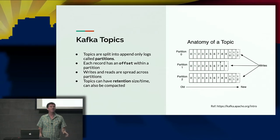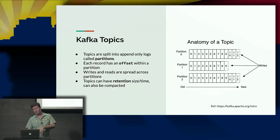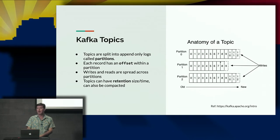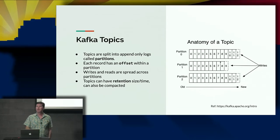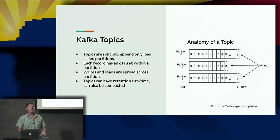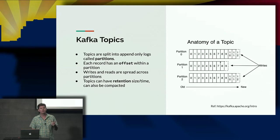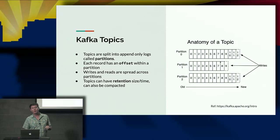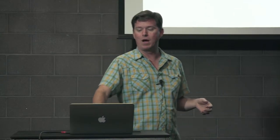Kafka topics can also be compacted. Since each record can have an ID, you can say when you write another record with the same ID, mark the old one as deleted. We've had problems with compaction at the rates we work at — it could have been a misconfiguration. Compaction is a costly process because Kafka is an append-only log, so as soon as you have to seek inside and search through your topic for matching records, that becomes expensive.